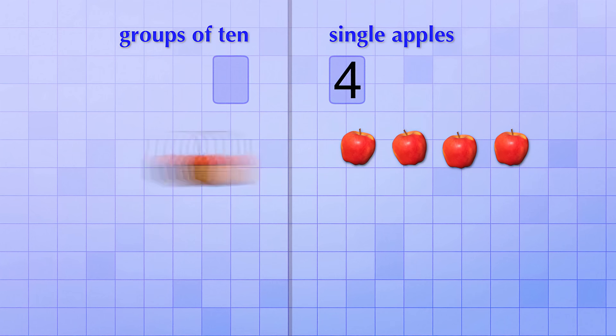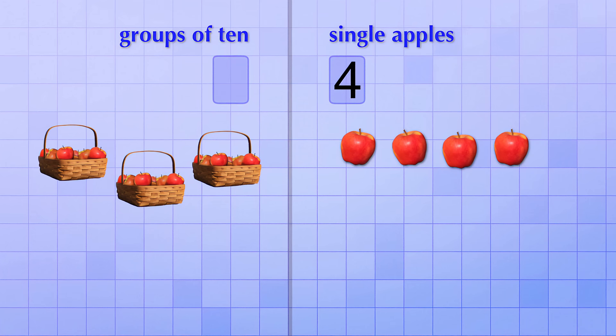For example, if we've picked only one group of 10, then we'll put the digit 1 in that number place. If we've picked 2 groups of 10, then we'll put the digit 2 in that number place. And if we've picked 3 groups of 10, then we'll put the digit 3 in that number place. And so on.